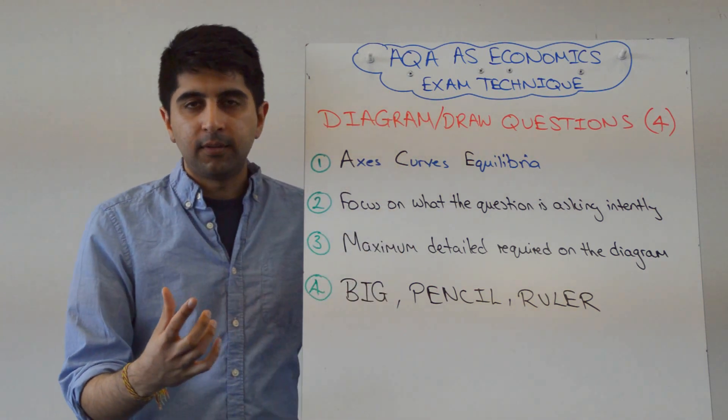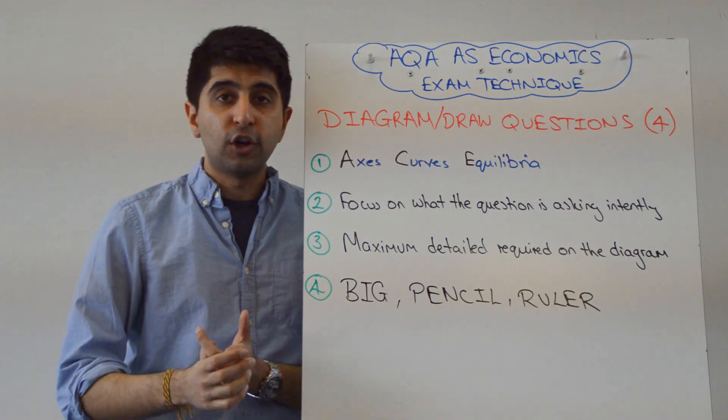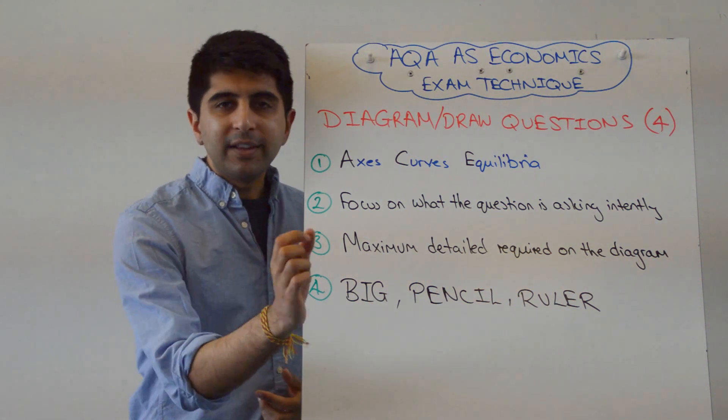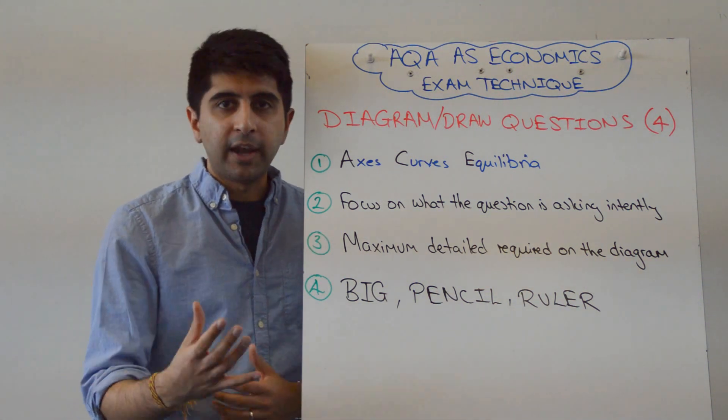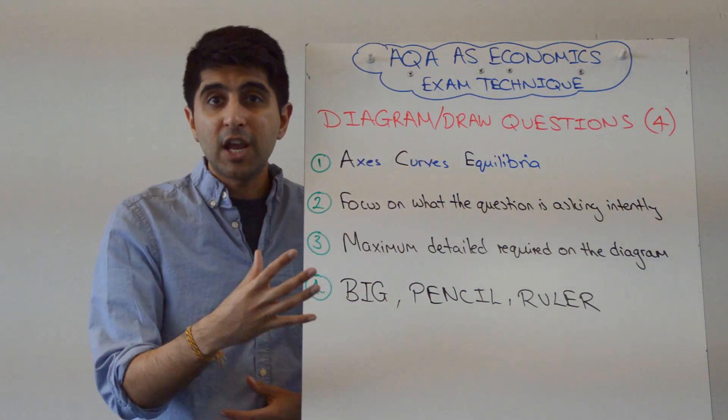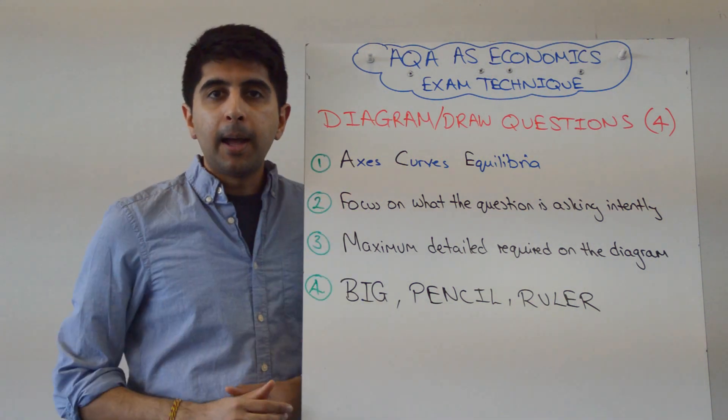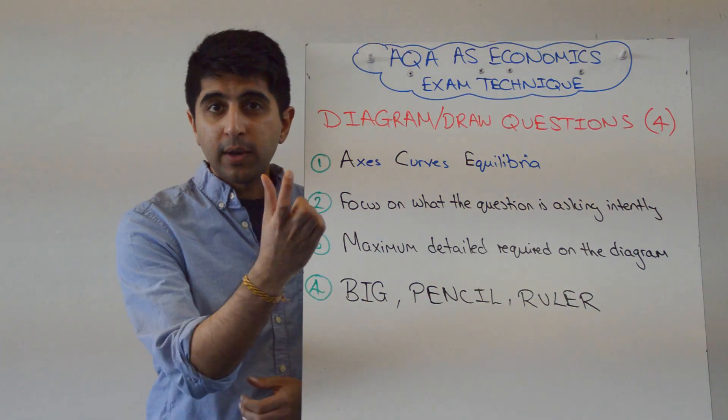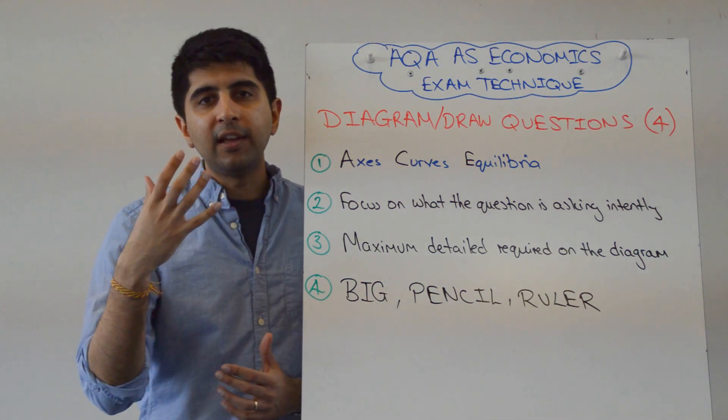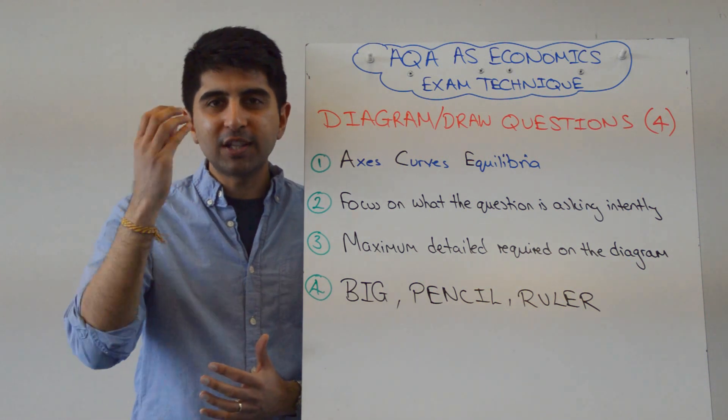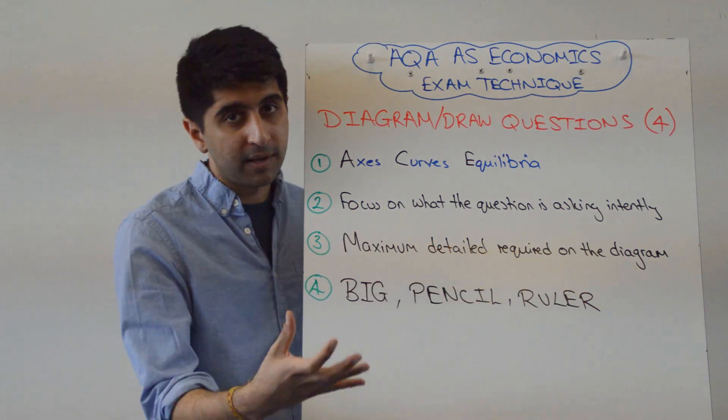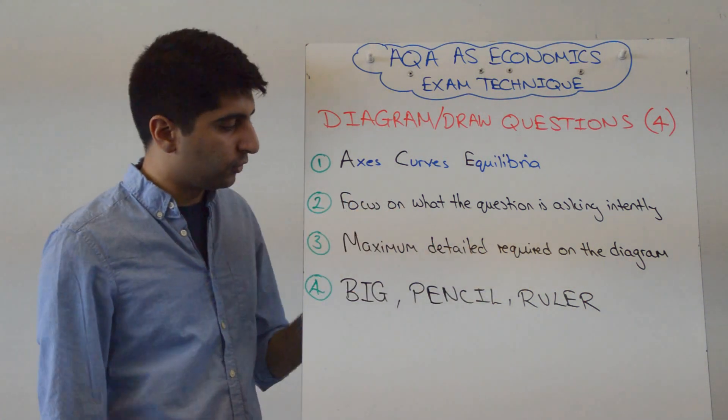Add maximum detail. So if you can show welfare loss on a market failure diagram, for example, show it. If you want to write something on the diagram to make it clear, write. Use arrows to show changes in price and quantities, or changes in the price level on a macro AS-AD diagram. Show the full employment level. All these key little extras, if they show off your economic knowledge and how good you are as a student, then add it on. Absolutely, as long as it's relevant to what the question is asking.